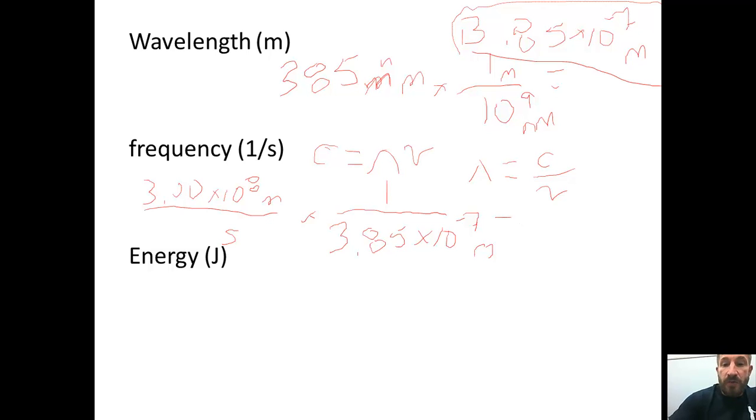When you do this, let's see which number you get. The answer that I got for this was 7.79 times 10 to the 14th. And the units for this are 1 over seconds, because this is a frequency, 1 over seconds, because that's how many waves would pass there in one second.